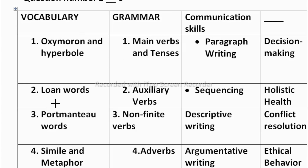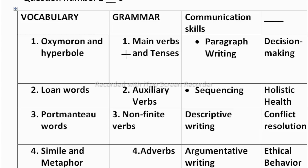For Unit 2, vocabulary includes loan words and grammar covers auxiliary verbs. Then sequencing, holistic health, portmanteau words, non-finite verbs in grammar, descriptive writing, and conflict resolution. Then simile and metaphor, adverbs, argumentative writing, and ethical behavior. For 20 marks you need to learn all these topics — 4 vocabulary and 4 grammar topics. If you learn these thoroughly, you can easily score in your exam.